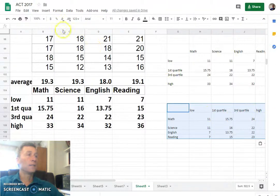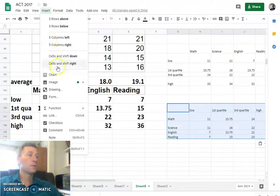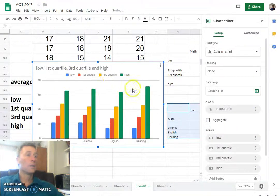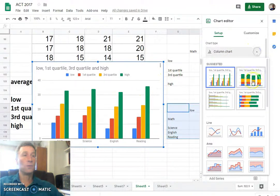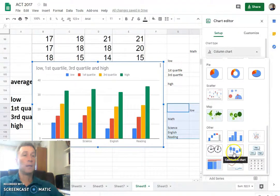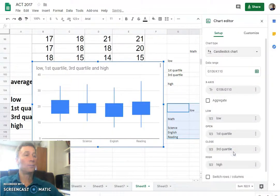So with that selected still, I can just say insert chart. It chooses a bar chart, let's change that to a candlestick chart. There we have our box plot.